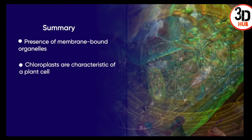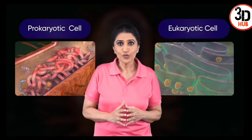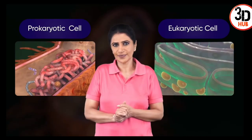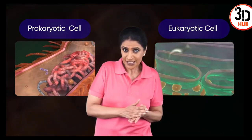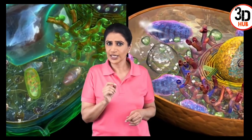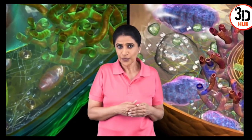Chloroplasts are characteristic of a plant cell, and ribosomes are of the 80S type. Ribosomes are present in every cell, meaning they are found in both eukaryotic and prokaryotic cells. If you were to isolate mitochondria or plastids from eukaryotic cells, you would also find ribosomes there.